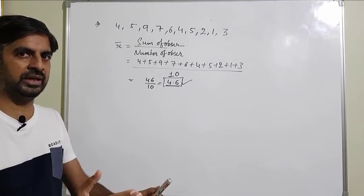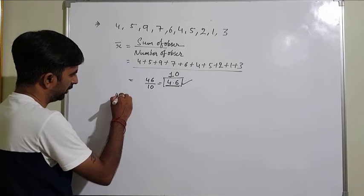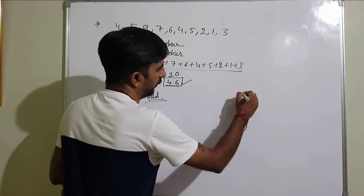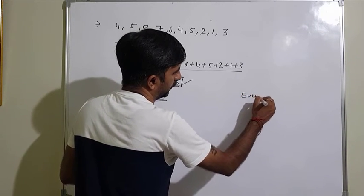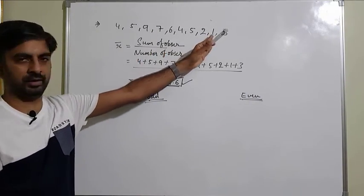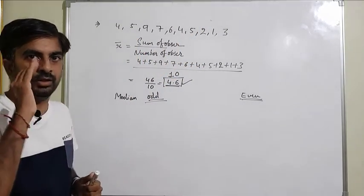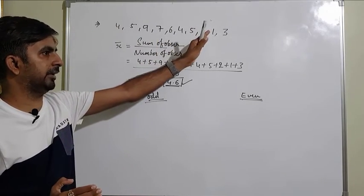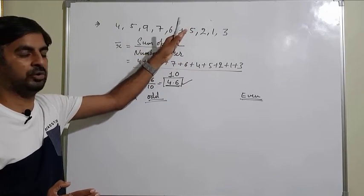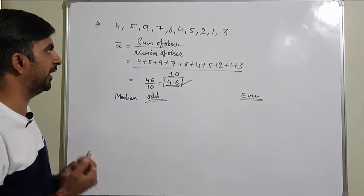Now we are going to find out median. For median, there are two formulas — one for odd number of observations and one for even number of observations. Median means the middle number. To find the middle number, you first need to arrange the data in ascending order.